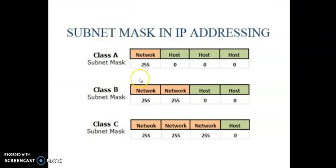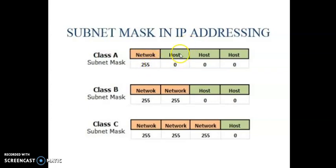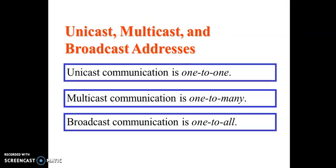Just to quickly revise: the default subnet mask for class A is 255.0.0.0, for class B it is 255.255.0.0, and for class C it is 255.255.255.0. Where the network ID is present, the mask value is 255; where the host ID is present, the mask value is 0. Additionally, there are three types of addresses: unicast is one-to-one communication, multicast is one-to-many within a group, and broadcast is one-to-all. With this, I am ending this important topic on subnet mask in IP addressing. Thank you.